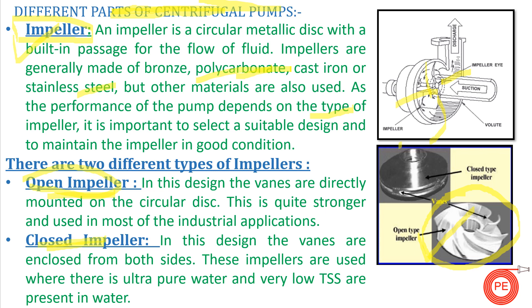The second type is the closed impeller. A closed impeller has two discs with blades in between them. Closed impellers are used where water quality is very fine, because if water quality is not good, soluble solids may get deposited between the plates, causing the impeller to choke and fail to deliver as designed. These are the two types of impellers used in the industry.